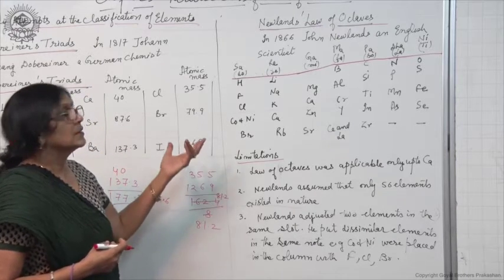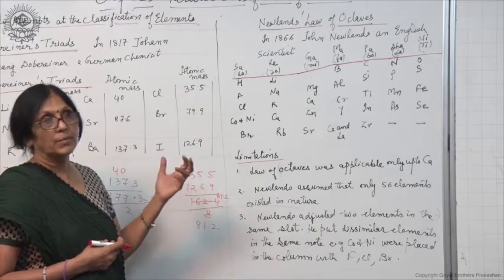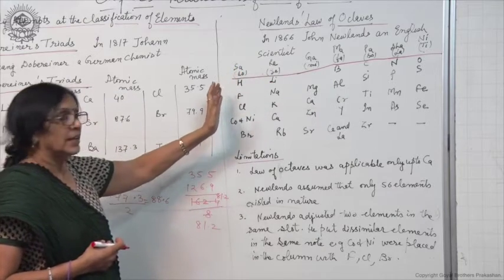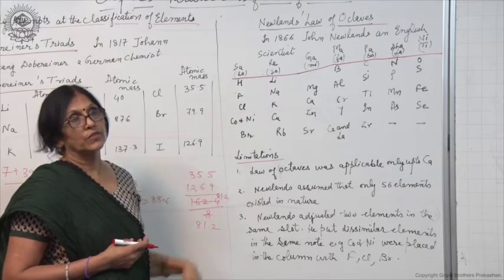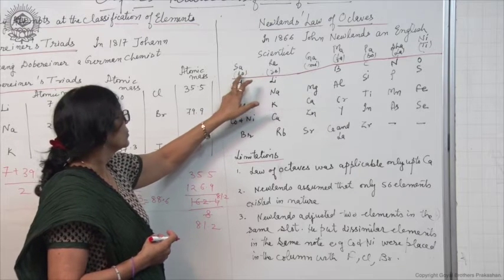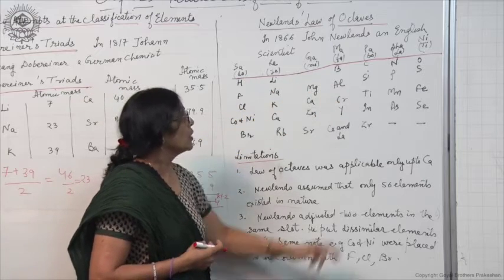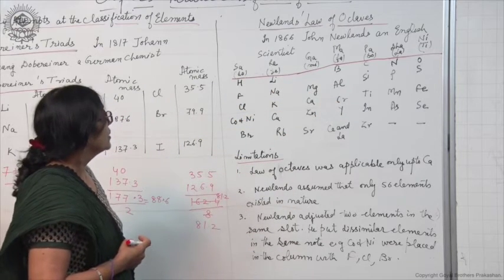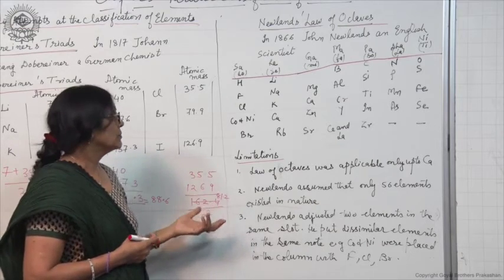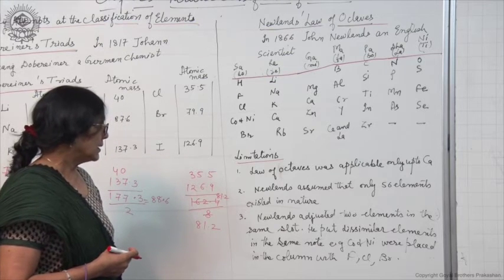Just like the musical notes — Sa, Re, Ga, Ma, Pa, Dha, Ni — the eighth note is similar to the first note. In western notation: Do, Re, Mi, Fa, Sol, La, Ti. So he arranged the elements known at that time in increasing order of their atomic masses. At that time, only 56 elements were known.